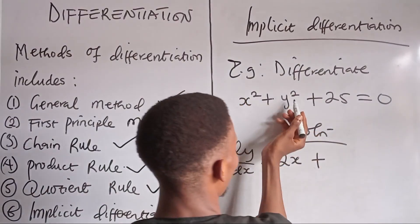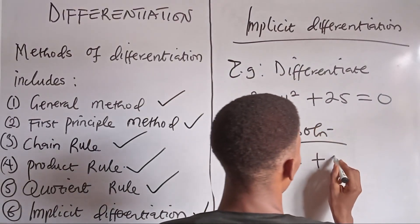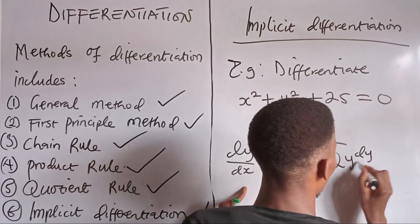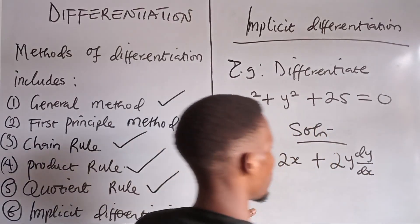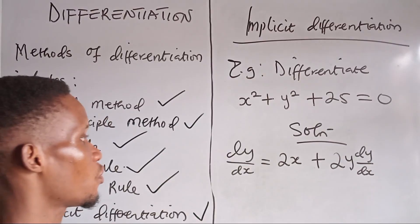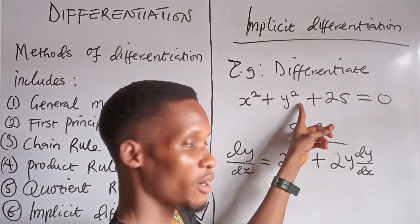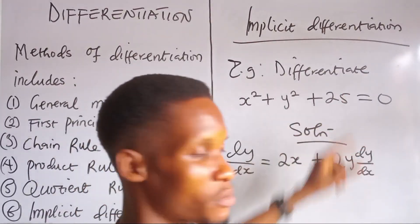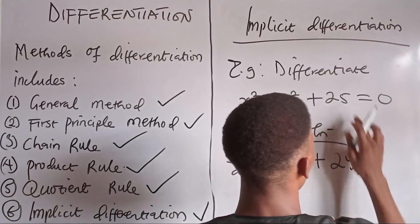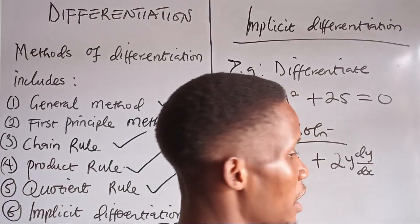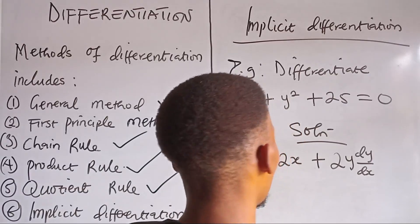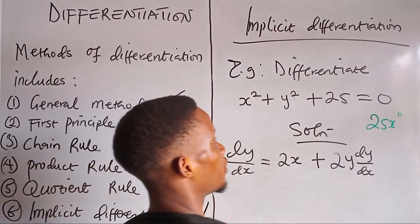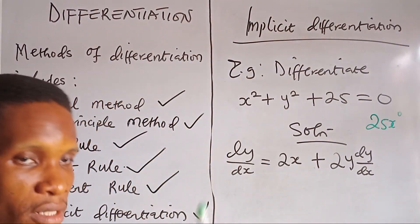So in that case, when you differentiate y squared, the 2 comes down and you have 2y, then you repeat dy/dx — that's how you do it. We are also differentiating 25 with respect to x. Since 25 has no x in it, differentiating a constant gives us 0. So we write plus 0, which equals 0.